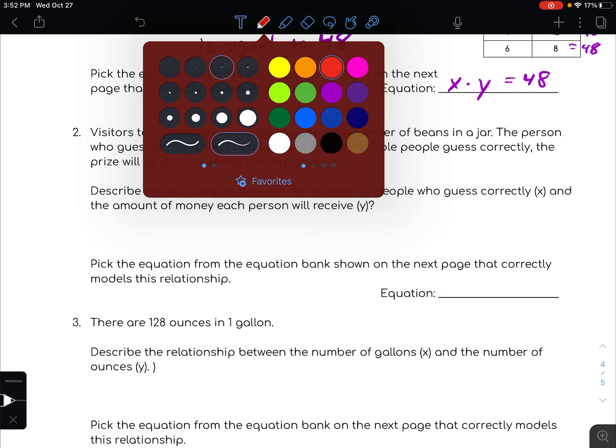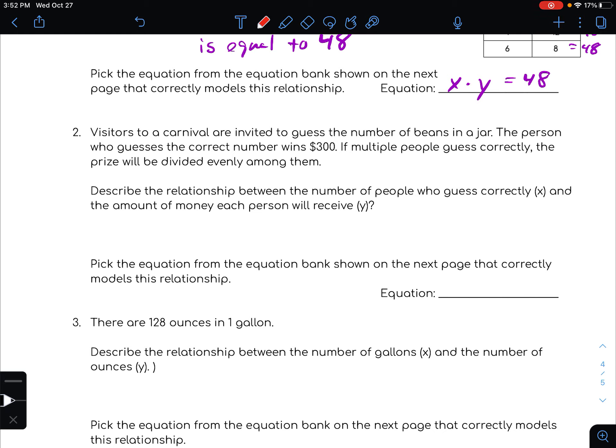Number two: Visitors to a carnival are invited to guess the number of beans in a jar. The person who guesses the correct number wins $300. If multiple people guess correctly, the prize will be divided evenly among them. Describe the relationship between the number of people who guess correctly and the amount of money each person receives.